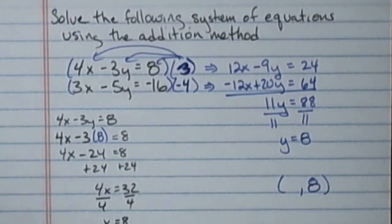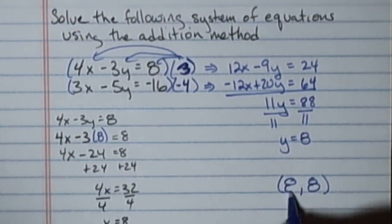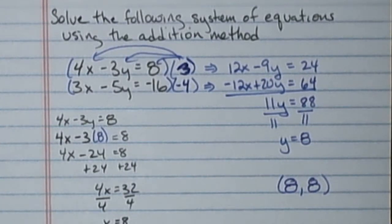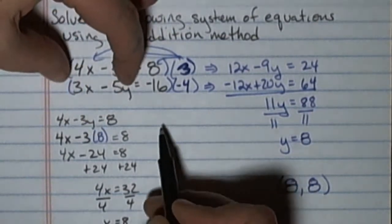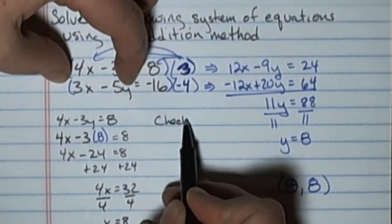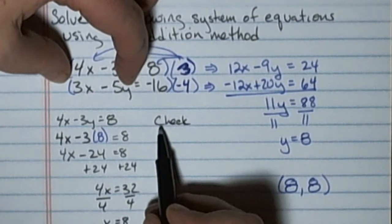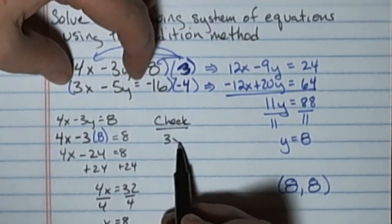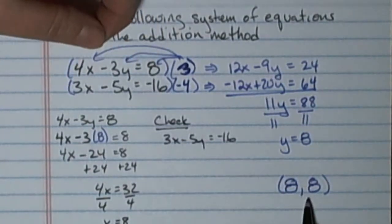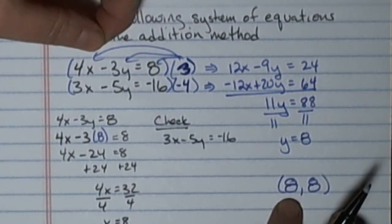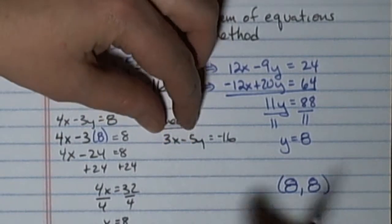In this case the x and y values turned out to both be 8. To check that solution, I'm going to pick the equation that I haven't used lately, 3x minus 5y equals negative 16. I'm going to substitute the values into that equation and make sure that point is the solution.